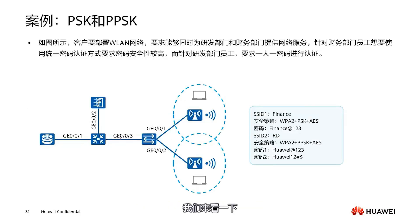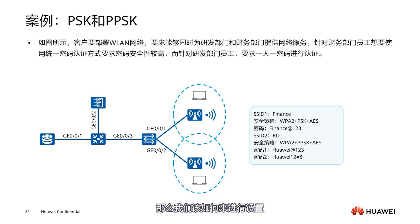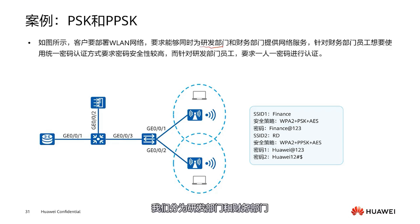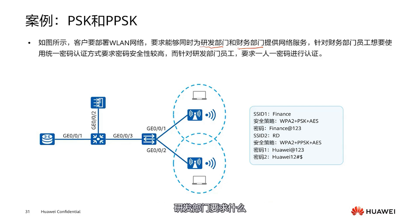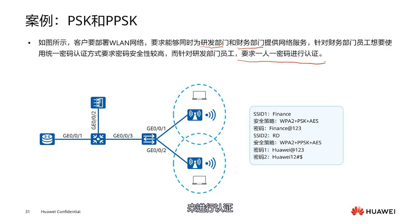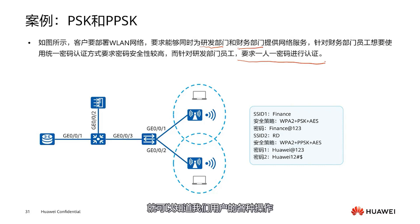So this is our PPSK, commonly used by large companies. In a network, if we are using PSK or PPSK simultaneously, how should we set it up? Let's look at this topology. A company is divided into the R&D department and the finance department. The finance department's security requirements are relatively high, but not as high as the R&D department. The R&D department requires one password per person for authentication, so each person can only use their own password, meaning everything each person does on the network will have a unique record.